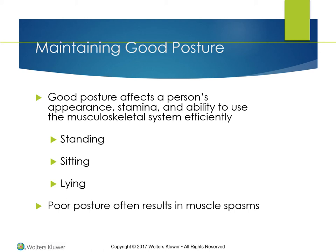Good posture in a lying position looks the same as in standing, except the person is horizontal. The head and neck muscles are in a neutral position, centered between the shoulders. The shoulders are level, whereas the arms, hips, and knees are slightly flexed, with no compression of the arms or legs under the body. The trunk is straight, the hips are level, the legs are parallel to each other, with the feet at right angles to the leg.